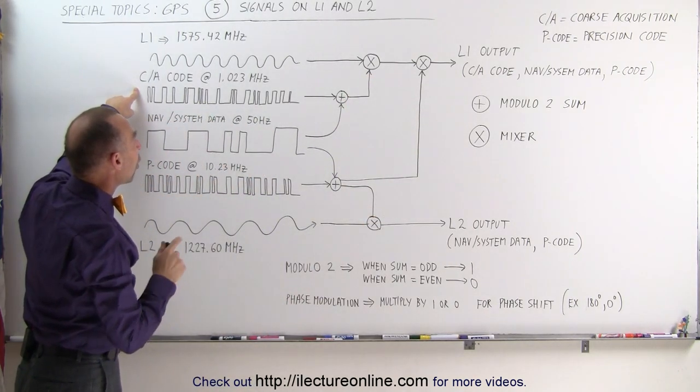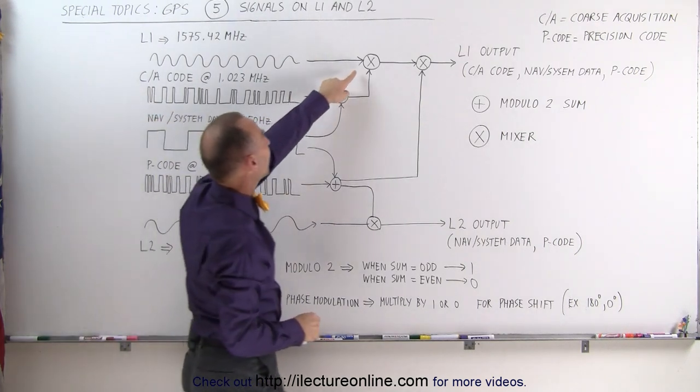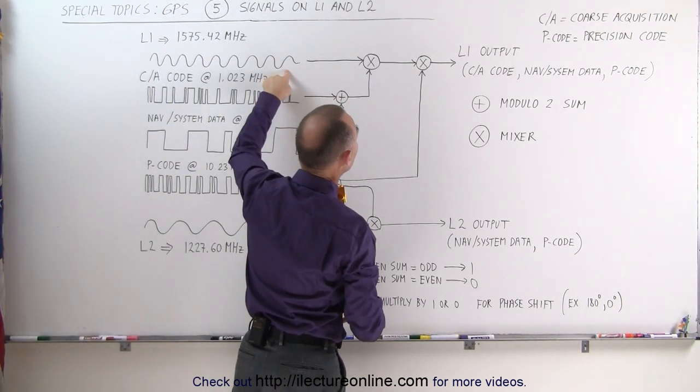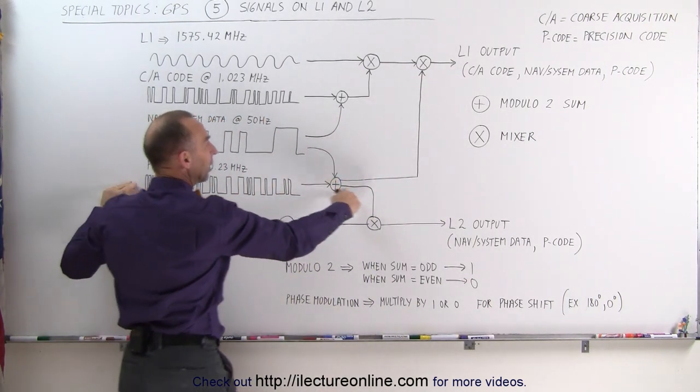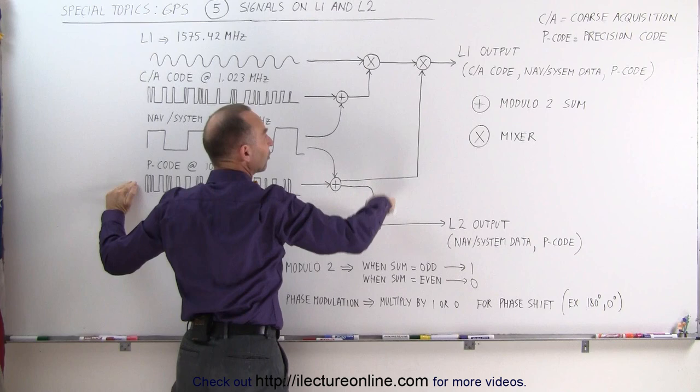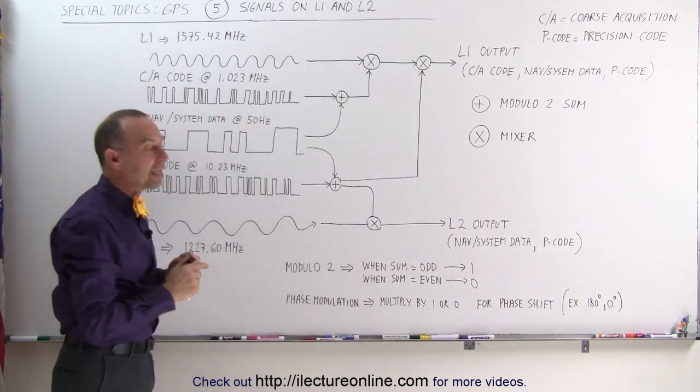Notice that the Coarse Acquisition code only is mixed in with the carrier frequency to be output on L1, and the precision code goes both to L1 and L2, and it gets mixed that way.